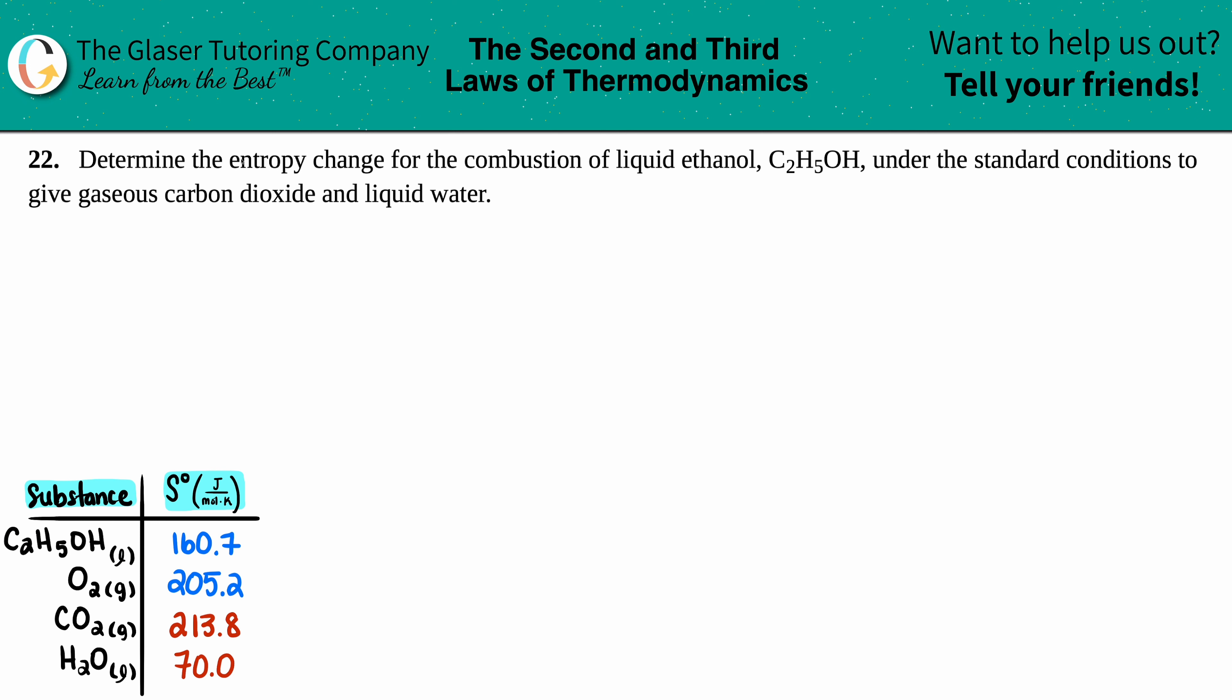Number 22: Determine the entropy change for the combustion of liquid ethanol, C2H5OH, under standard conditions to give gaseous carbon dioxide and liquid water. We want to find the entropy change. Remember, entropy is S, so anytime we see a capital S that's entropy. Entropy is just talking about randomness or disorder of molecules. We want that entropy change, and a change is always a delta, that little triangle, so we want to find what that delta S is.